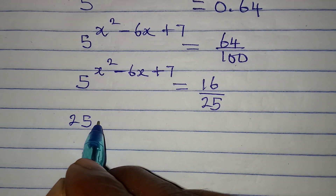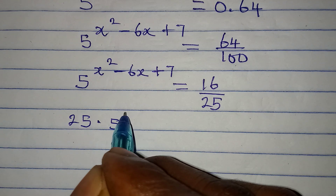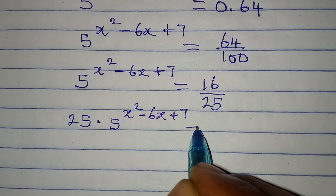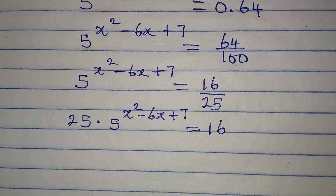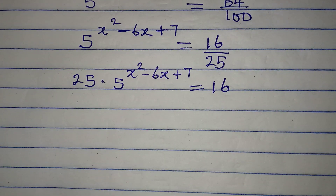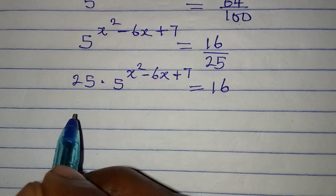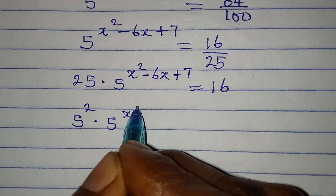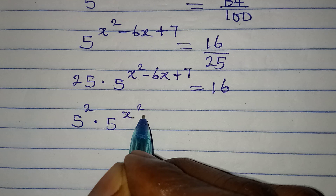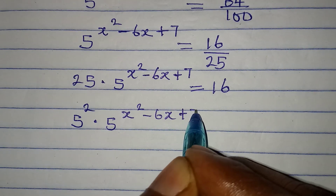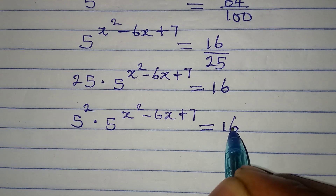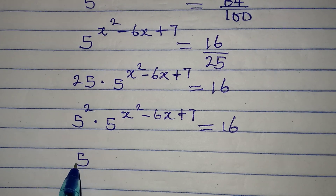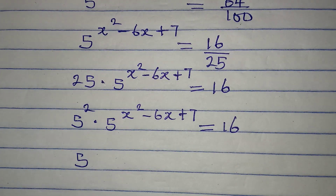So 25 will multiply 5 to the power of x squared minus 6x plus 7, and this is equal to 16. Now remember, 25 is the same thing as 5 squared. So we have 5 squared multiplied by 5 to the power of x squared minus 6x plus 7, equal to 16. According to the law of indices, because we have the same base, I will pick the base 5 and add the powers.